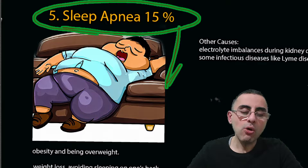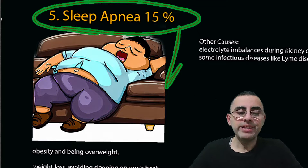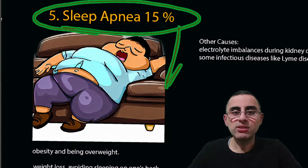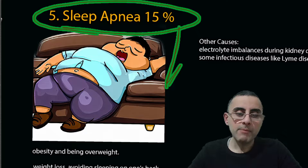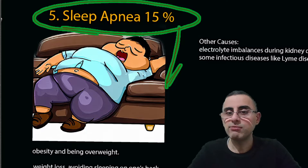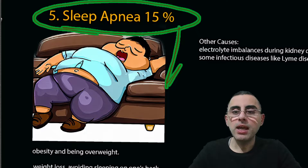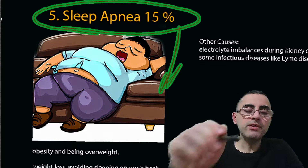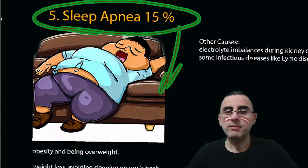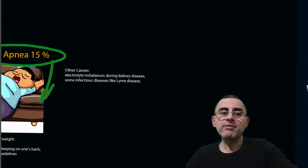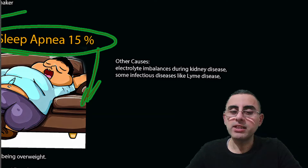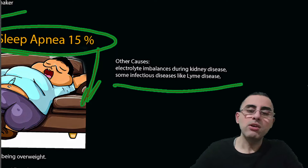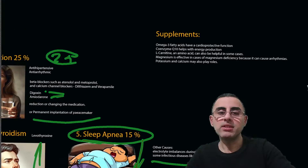For sleep apnea, weight loss is a key solution. Sleeping on your side rather than your back is important, as is avoiding alcohol and sedative medications. In severe cases with no improvement, surgery may be needed. Other less common causes of bradycardia include electrolyte imbalance, which can occur during kidney disease, and infectious diseases such as Lyme disease.